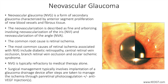Retinal ischemia is the common denominator, leading to neovascularization of the iris or NVI and neovascularization of the angle or NVA, and eventually NVG. This can be associated with diabetes, retinal vascular occlusive disease like central retinal vein occlusion or branch retinal vein occlusion, tumors, ocular or periocular radiation, uveitic diseases, and iatrogenic or surgical causes.